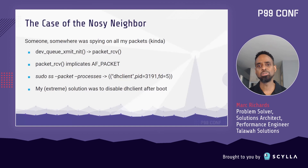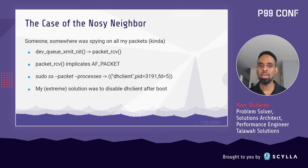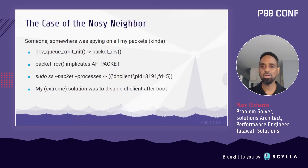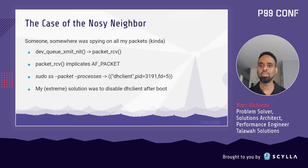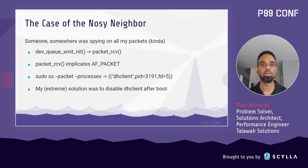At that point, the function was weighing in at about 3.5% of the flame graph, which was noteworthy. By examining the kernel source code, I determined that this function should really only be called if someone is basically listening in and getting a copy of every outgoing packet. That would be perfectly reasonable to expect if I was running something like tcpdump in the background, but I wasn't. So I had to dig deeper.